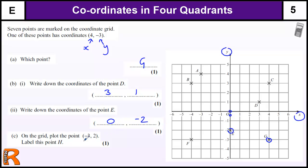Now we've got to plot the point (-3, 2) and label it H. Minus 3 is the x value and 2 is the y value. So we go minus 3 in the x direction — across to minus 3, which is 3 to the left. Then we go 2 in the y direction, which is up 2. We mark that point and label it H.